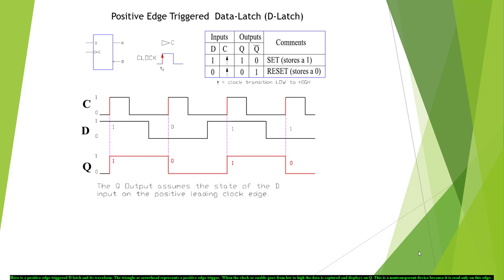Here is a positive edge trigger D-latch in its waveform. The triangle arrowhead represents a positive edge trigger. When the clock or enable goes from low to high, the data is captured and displays on Q. This is a non-transparent device because it is read only on the edge.